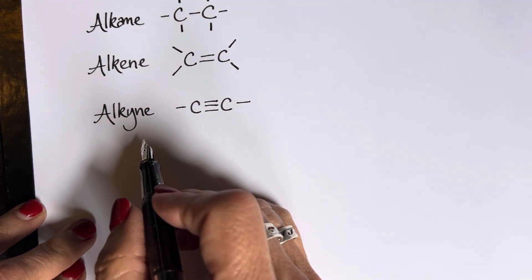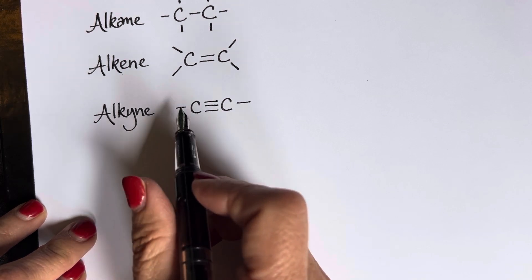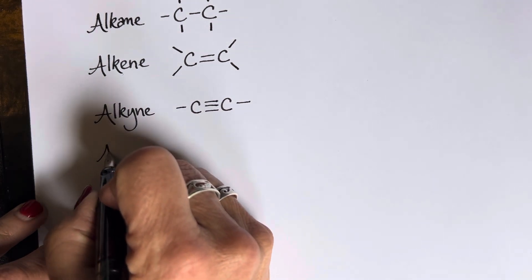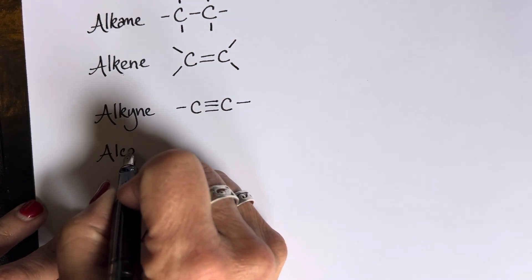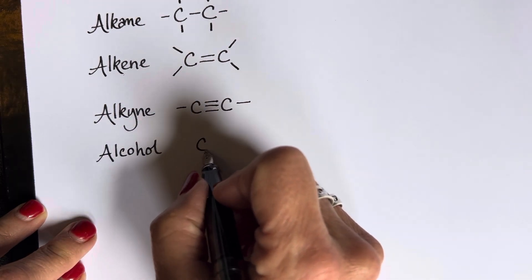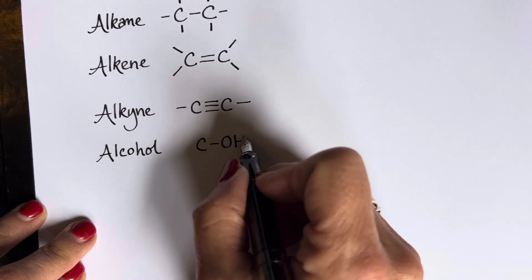Next up, let's start including what we call heteroatoms, which is atoms that are other than carbon. We'll start with the alcohol group. So this is where bonded to a carbon, we've got an OH group.